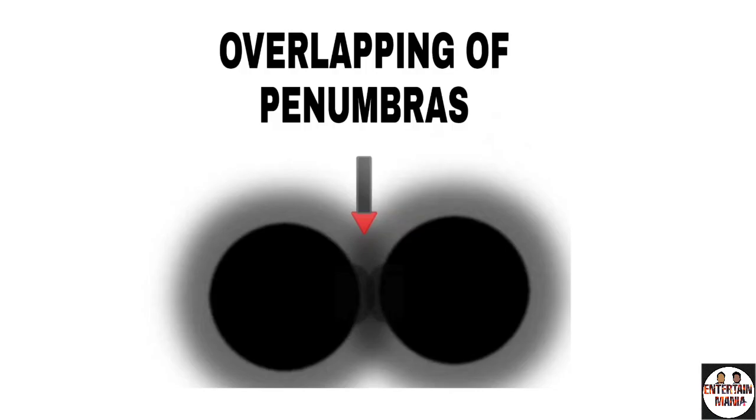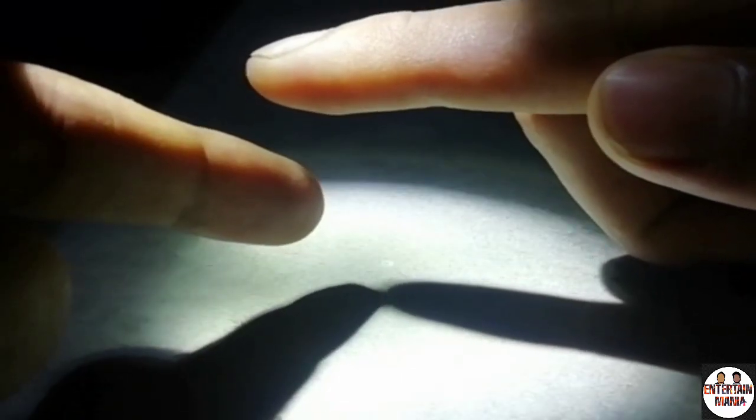Bending occurs when two shadows come closer and their penumbras overlap. Due to overlap the penumbra region gets darker, and thus the penumbra region gets visible to naked eyes. So it seems like bending of shadow.